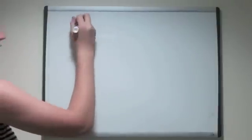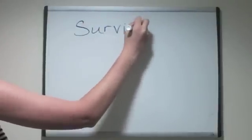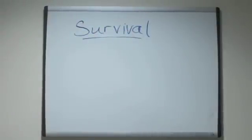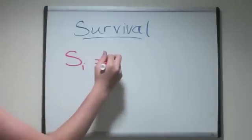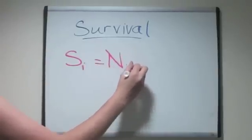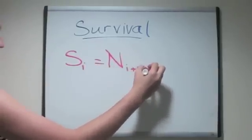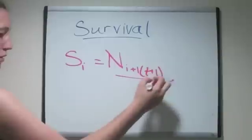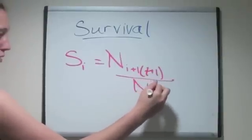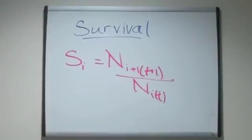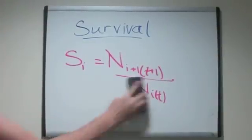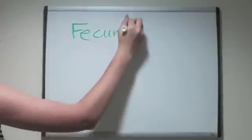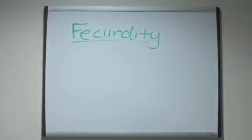To analyze some models, you need to estimate population parameters. One such is survival. F sub i equals the survival from age class i to i plus 1. N sub i t is the number of age class i at time t. N sub i plus 1 and t plus 1 equals the number in age class i plus 1 at the time t plus 1.